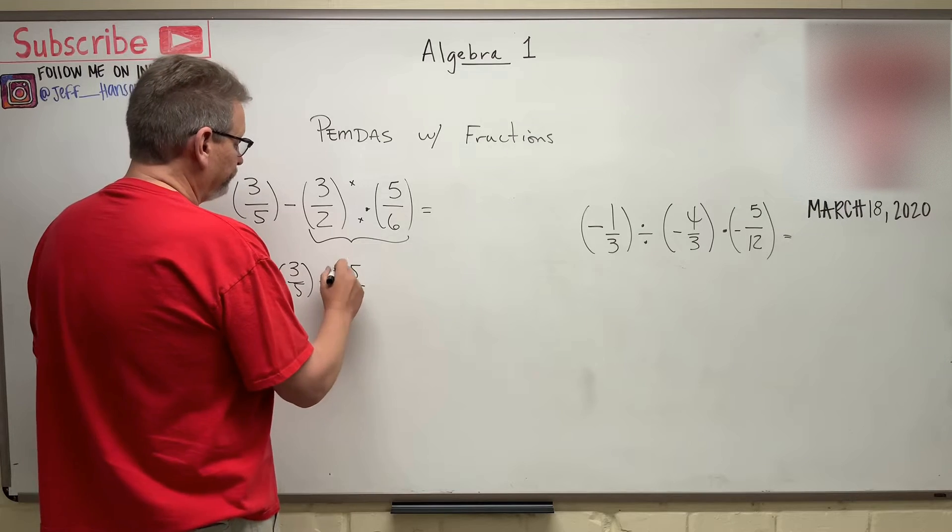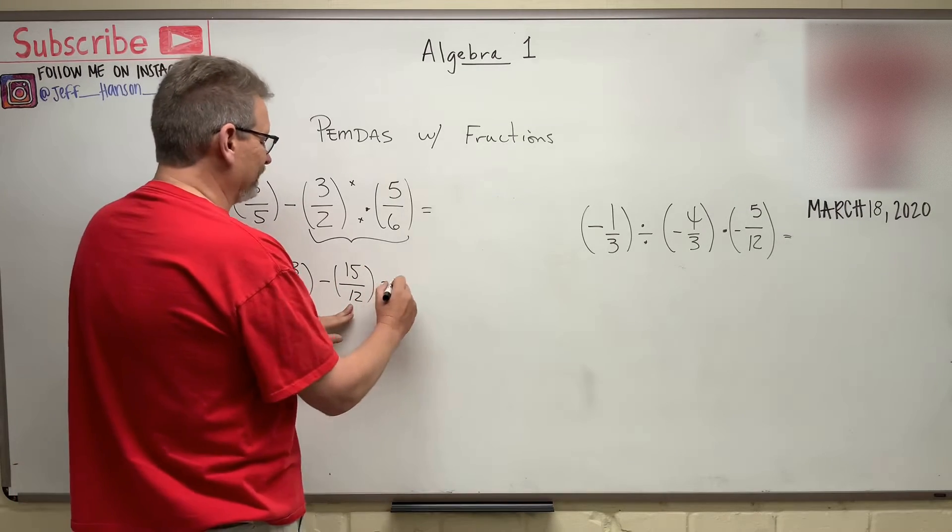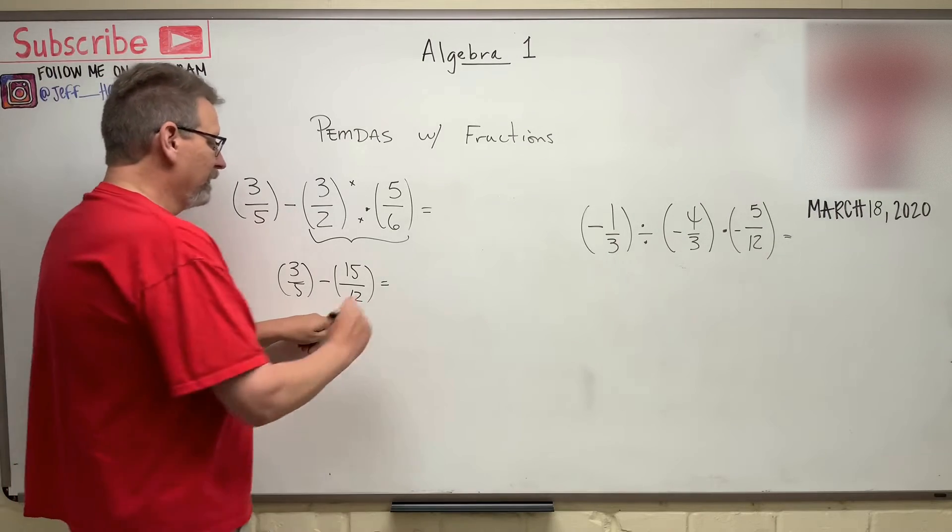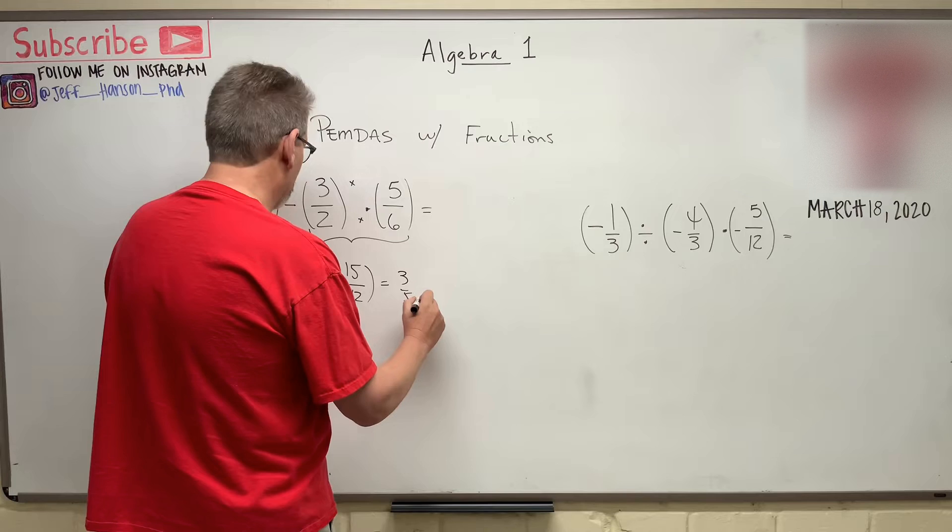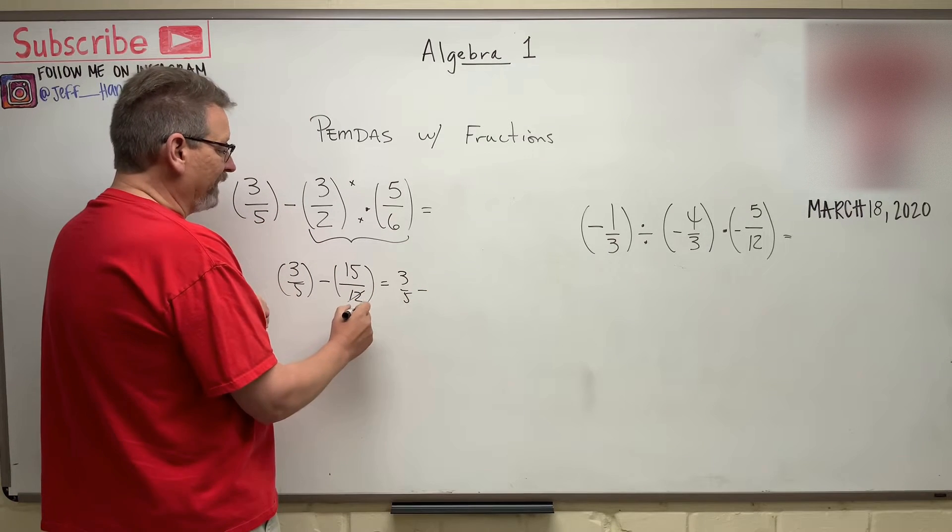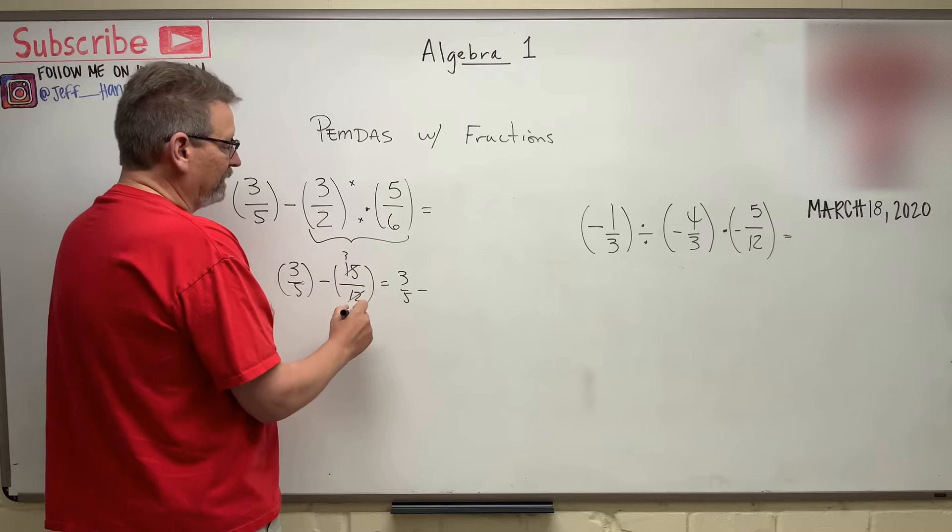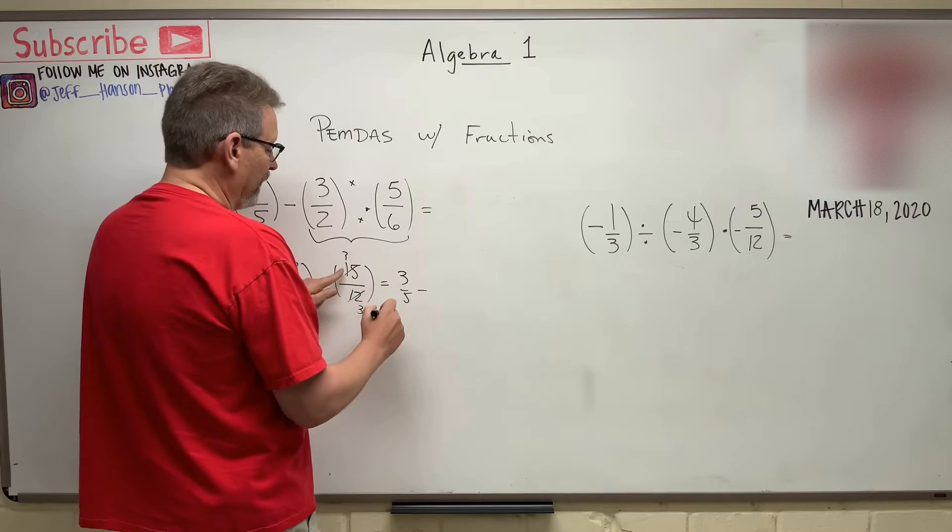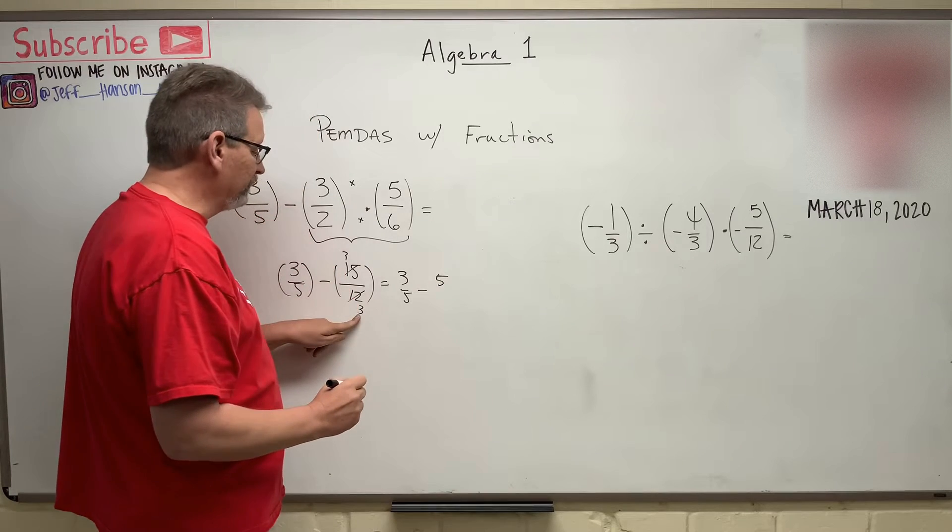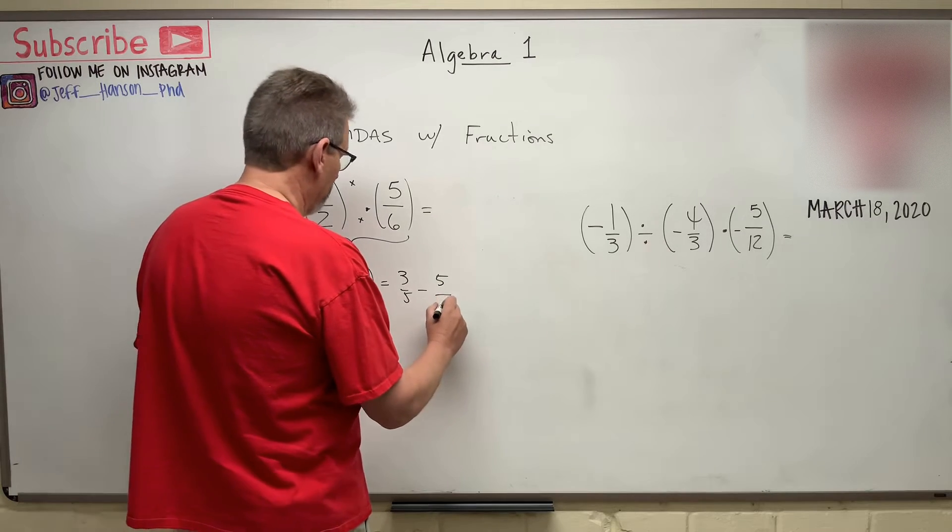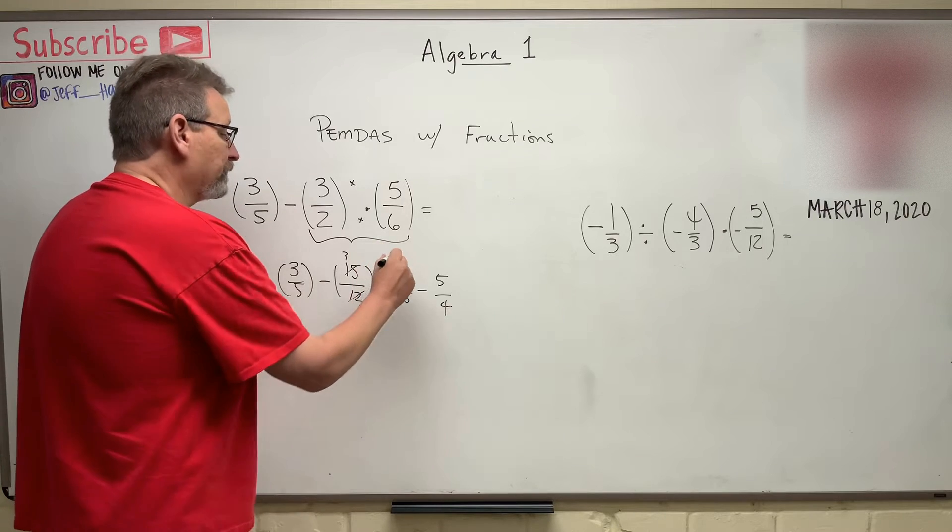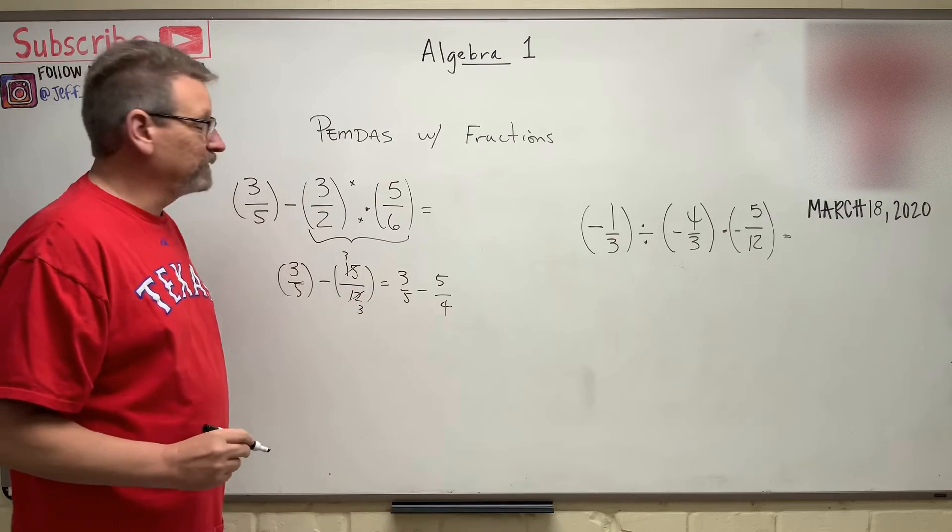Now, right away, one of the things I can do to make this easier is that'll reduce. That becomes 3/5 minus - how do you reduce that? A 3 will go into that guy and a 3 will go into that guy. How many times does 3 go into 15? 5 times. How many times is 3 going into 12? 4 times. So now I'm left with 3/5 minus 5/4.